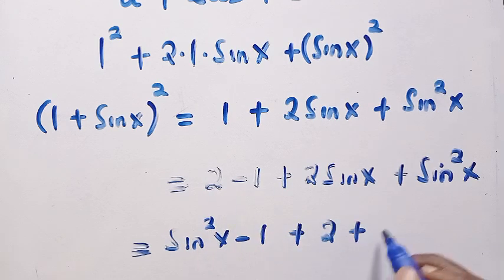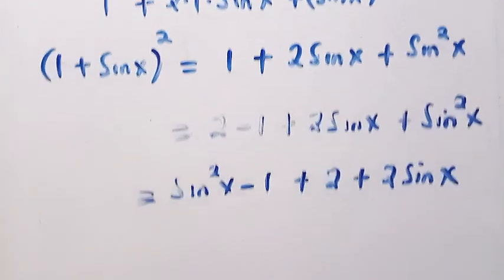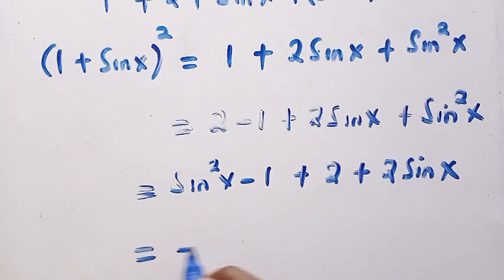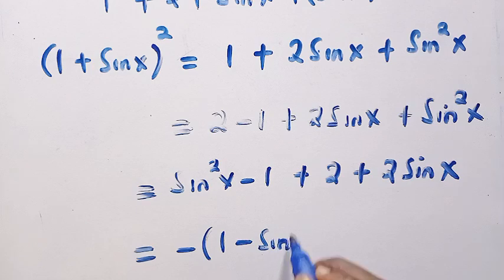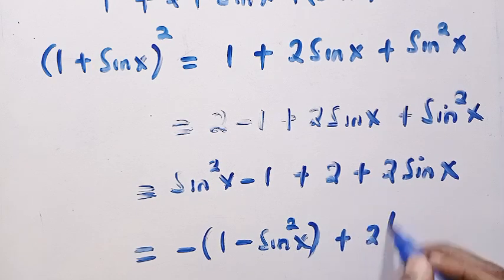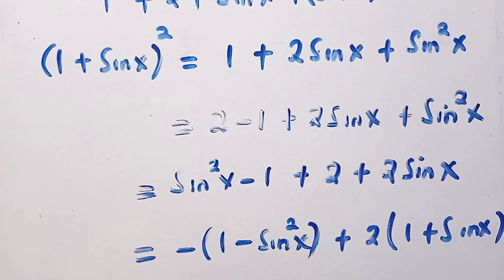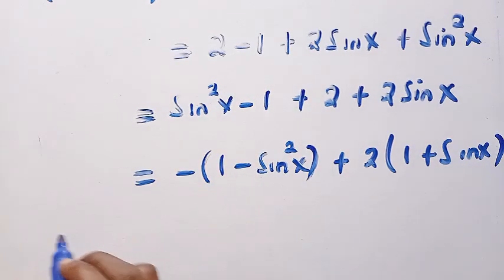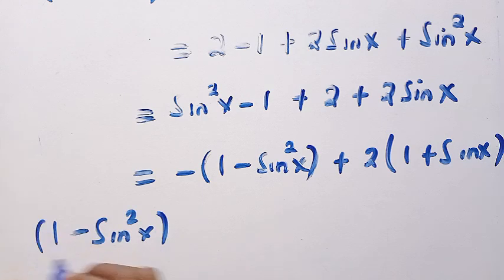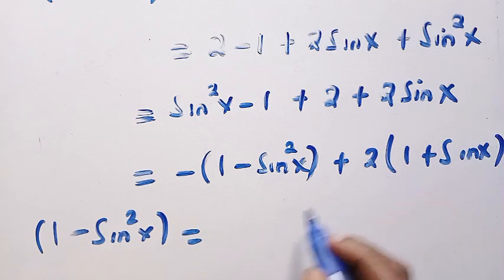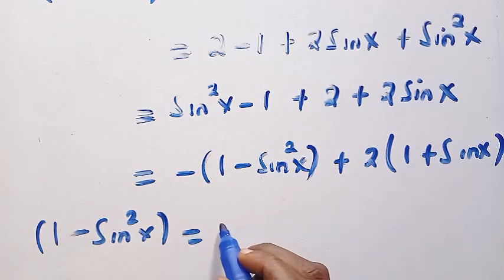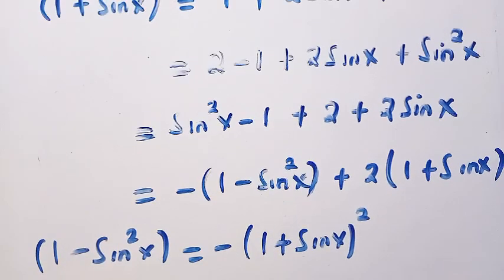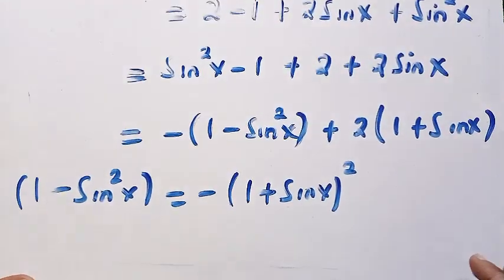So we have sine squared x minus one plus two plus two sine x. Taking out a negative sign converts sine squared x minus one into minus of one minus sine squared x, and factoring out two gives two times one plus sine x. So the full expression equals one minus sine squared x, plus two times one plus sine x, all equal to one plus sine x squared.